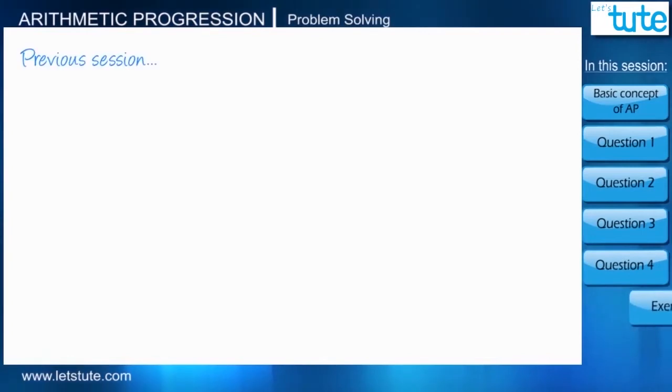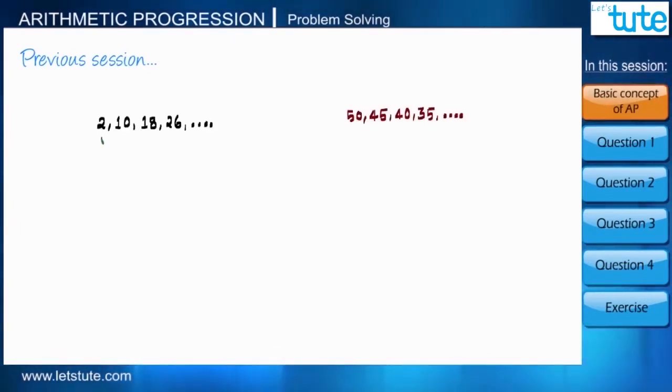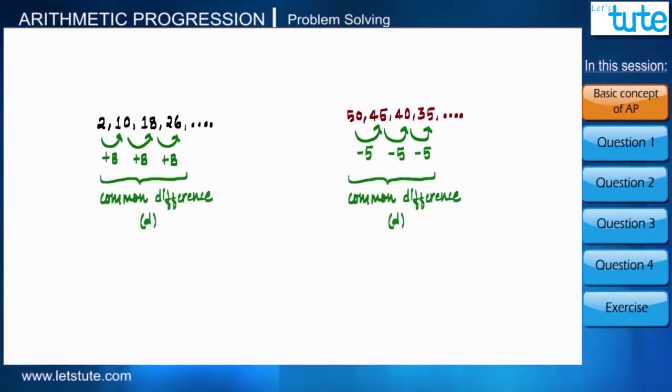Hello everyone, in the previous session we learned the basic concept of arithmetic progression where we learned that the sequence of numbers follows arithmetic progression only if the difference between consecutive numbers is constant, which we call common difference. This common difference may be positive or negative.